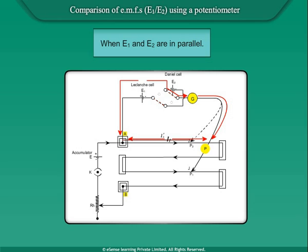If the balancing length is L2 dash, then AP2 = L2 dash, therefore E1 - E2 = KL2 dash. This is the second equation.